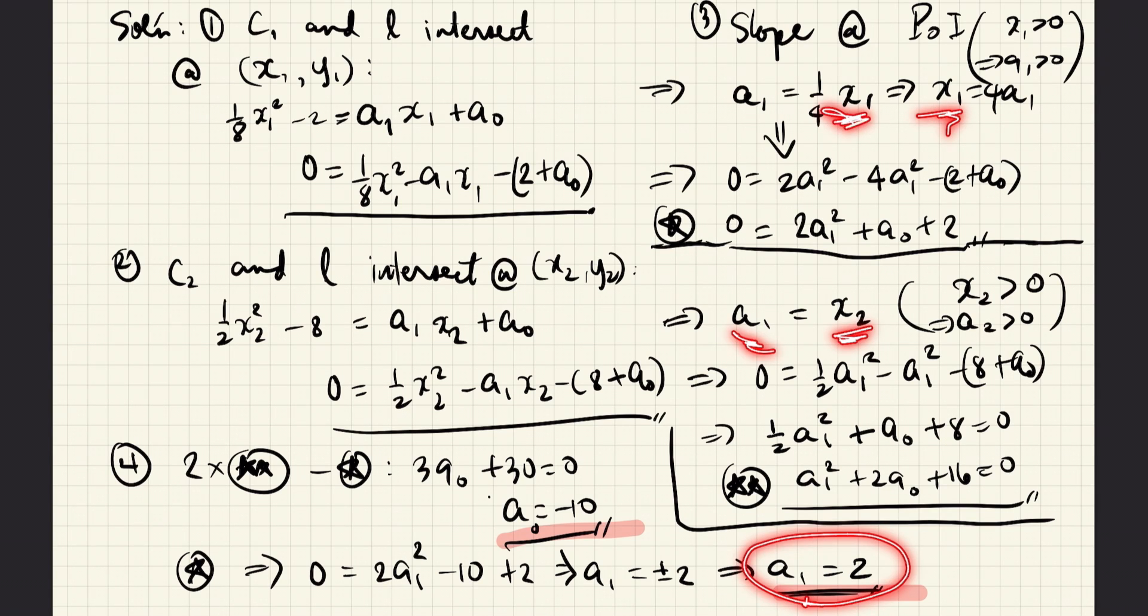However, we must choose the positive solution, because we know that a1 equals x2 and (1/4)x1. Both x1 and x2 must be positive according to the problem. And therefore, a1 must also be positive.